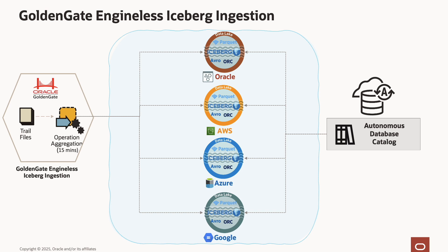GoldenGate uses Apache Iceberg Java API for engine-less Iceberg ingestion and does not require any processing engine to ingest Iceberg table format. Oracle GoldenGate Iceberg engine-less replication supports a rich set of Iceberg catalogs including Amazon Glue with Amazon S3, Hadoop, JDBC, Nessie, Polaris, and REST catalogs with all third-party cloud storage services including AWS, GCS, and Amazon S3. GoldenGate runs operation aggregation and improves replication performance for Apache Iceberg ingestions. GoldenGate writes Parquet format as default; other supported formats are ORC and Avro. GoldenGate also supports automated Iceberg table creation and initial load into Iceberg table format, and you can use Autonomous Database Data Catalog to fully utilize Iceberg tables created by GoldenGate.